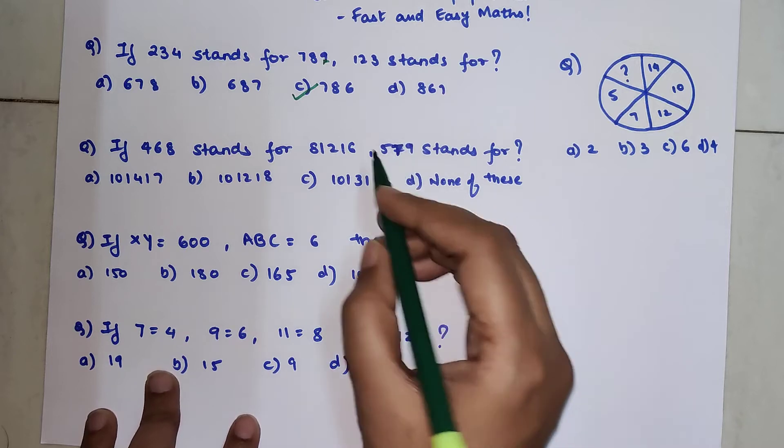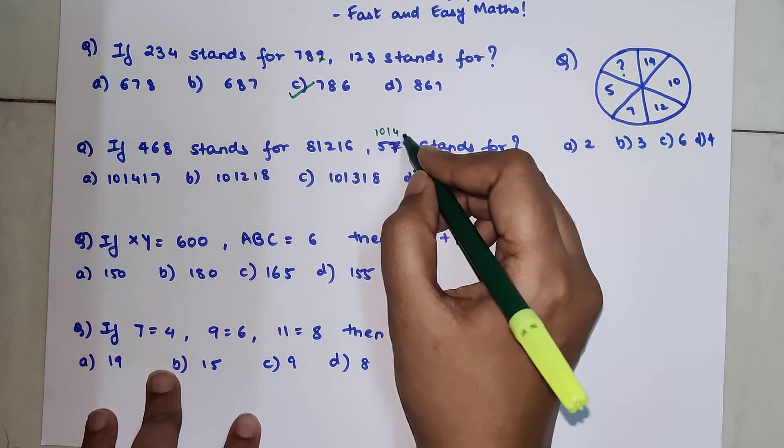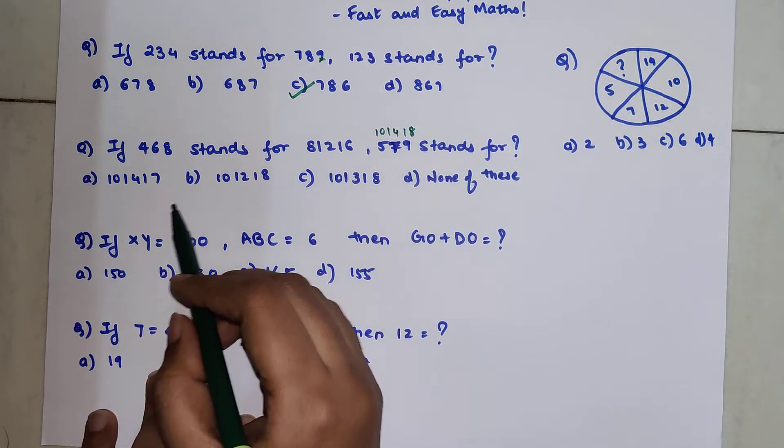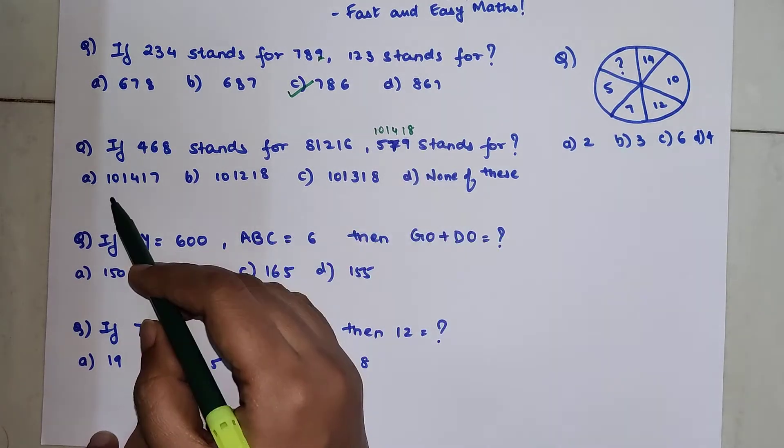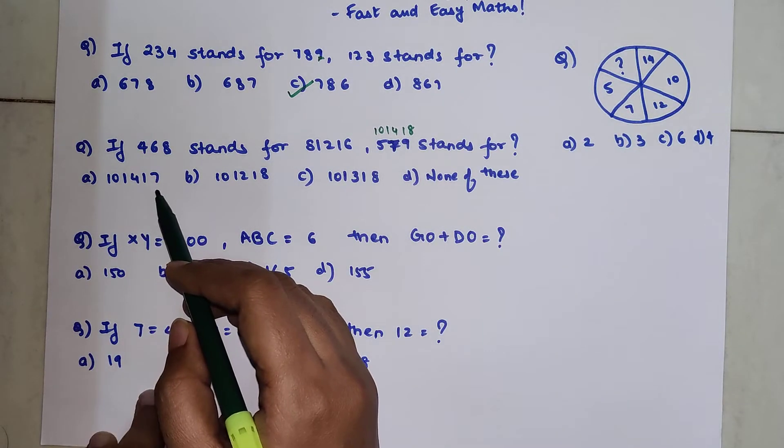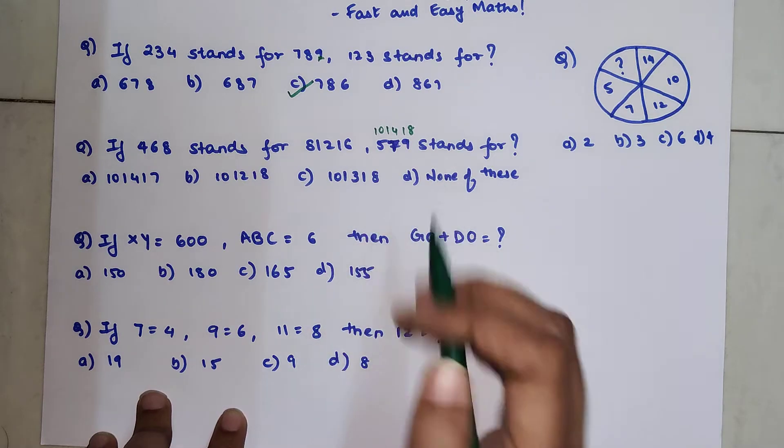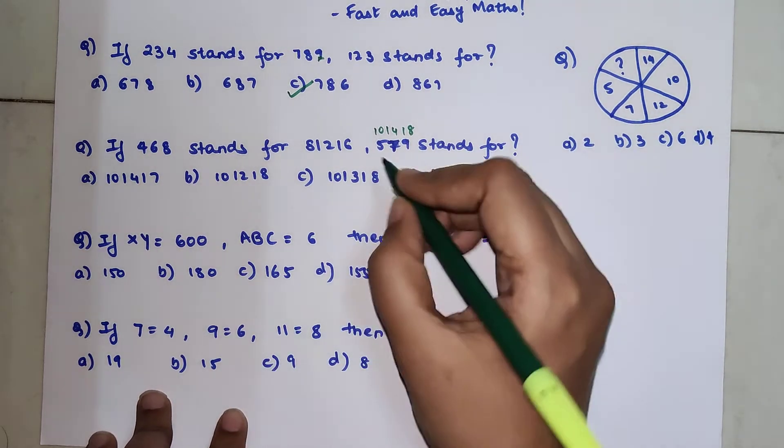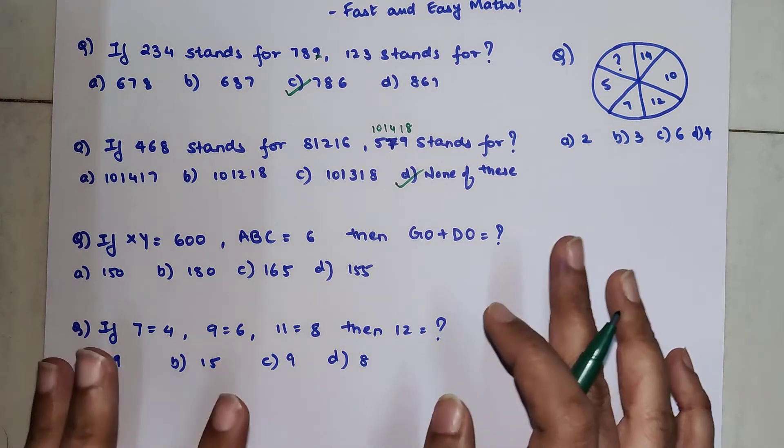So 5 will be what? 10, 7 will be 14 and 9 will be 18. So let's see if we have that. No. We don't have any of the options with this answer. We have 10, 14 but it is 17. And we have 10 and 18 but in between it is 13. So in such a case you will mark none of these. I hope you have understood this.